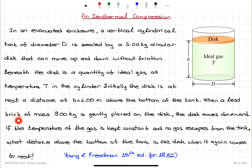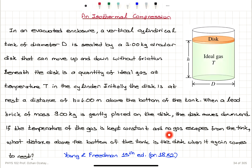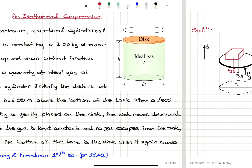When a lead brick of mass 9 kilograms is gently placed on the disk, the disk moves downward. If the temperature of the gas is kept constant — isothermal — and no gas escapes from the tank, what distance above the bottom of the tank is the disk when it again comes to rest? That means when equilibrium is established again.